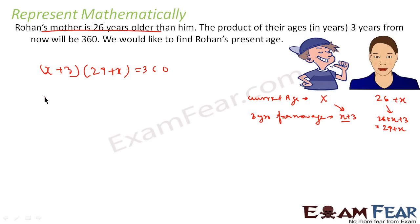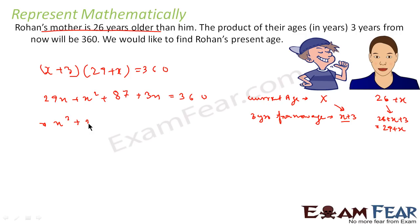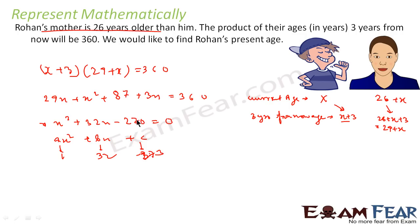We solve this: expanding x plus 3 into 29 plus x gives 29x plus x squared plus 87 plus 3x equals 360, or x squared plus 32x minus 273 equals 0. This is a quadratic equation of the form ax squared plus bx plus c, where a equals 1, b equals 32, and c equals minus 273. We have represented this real life scenario as a quadratic equation.